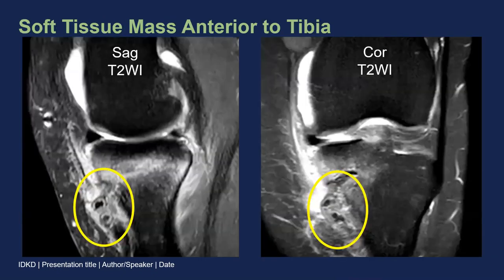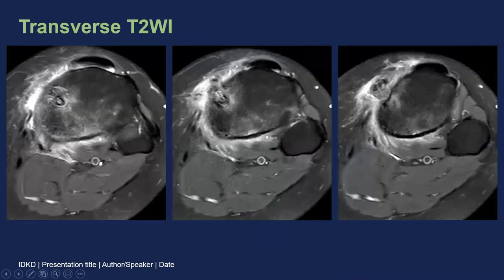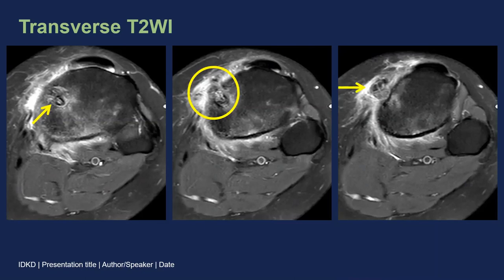Now we can go back and diagnose our patient. One of the findings was a soft tissue mass anterior to the tibia containing some sort of foreign material. On T2-weighted images, we can see part of the interference screw is sitting within the tunnel and the tunnel looks normal, but where it exits the anterior cortex of the tibia, there is an inflammatory mass anteriorly surrounding fragments of the bioabsorbable screw. This is called a pre-tibial cyst.